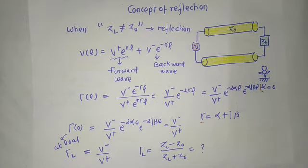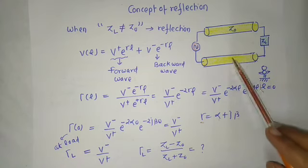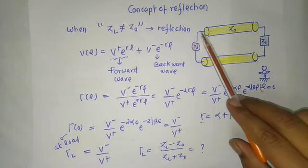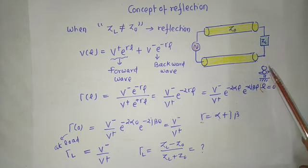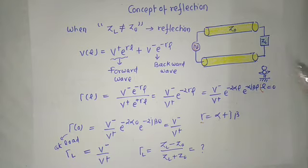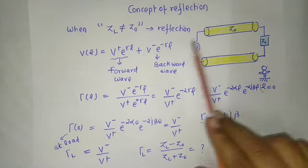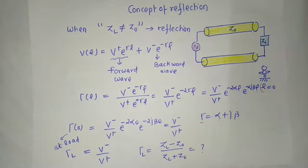Let's try to understand the concept of reflection. A transmission line is a two-conductor system. One end is connected to a source and the other end is where the load is located. The characteristic impedance of the transmission line depends on its basic parameters: R, L, G, and C.